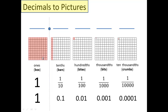It talks about the different decimal place names: the tenths, hundredths, thousandths. And specifically for this video, we really want to focus on what they look like. One way to help us remember what they look like is to remember what they are in Kipish. Kip ones would be a box, tenths would be a bar, this little square for the one hundredth is a byte, and then crumbs. And if you're able to memorize these, you'll be just fine with drawing pictures.